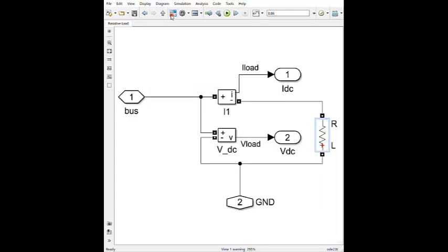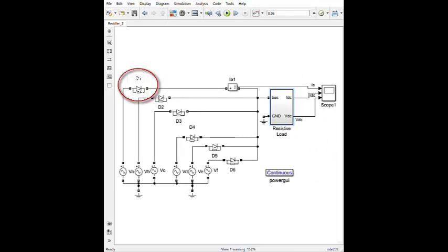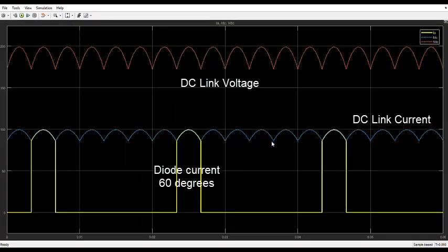During the nominal operation, each diode has to conduct 10,000 amps for only 60 degrees.